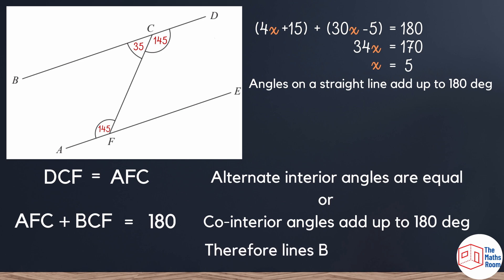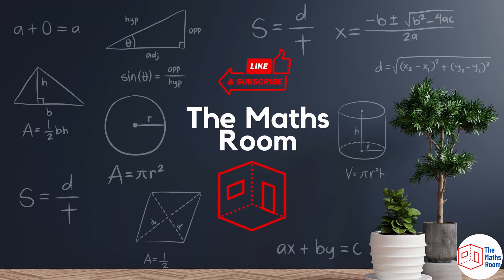Therefore, lines BD and AE are parallel. I hope it helped. Have a great day.